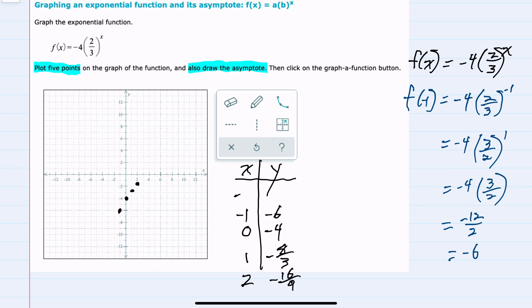Then substituting x equals negative two, we would again start by taking the reciprocal of two-thirds, three-halves, and then raising it to the positive second power, which gives us nine-fourths. Multiplying here, we can see that the fours would cancel, leaving me a negative nine. So negative two, negative nine.